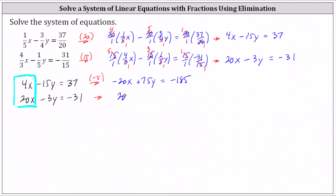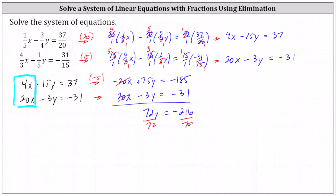The second equation remains the same. Now we add the two equations together. Notice negative 20x plus 20x is zero, which is why we multiplied the first equation by negative 5. Seventy-five y plus negative 3y is 72y. Equals on the right side, negative 185 plus negative 31, which is negative 216. Now we divide both sides by 72 to solve for y, giving us y equals negative 216 divided by 72, which equals negative 3.